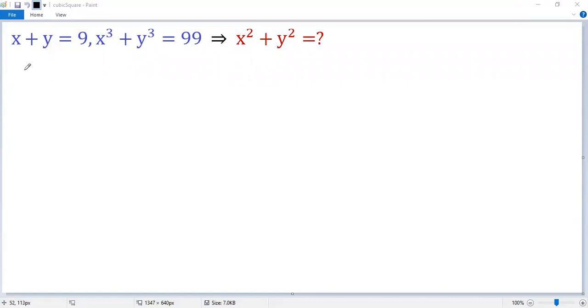From the first condition, x plus y equals 9. Square both sides, so we get x squared plus 2xy plus y squared equals 9 squared, 81. Denote it as equation 1.